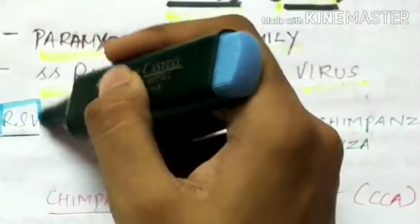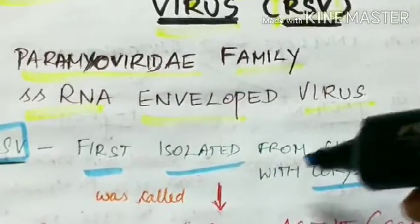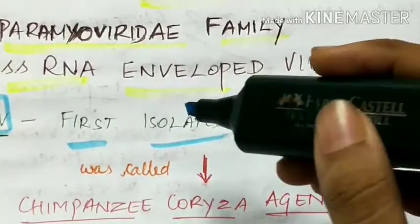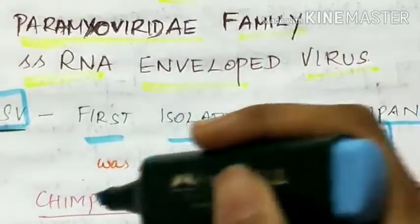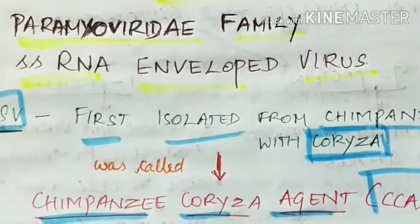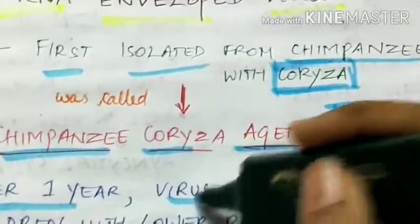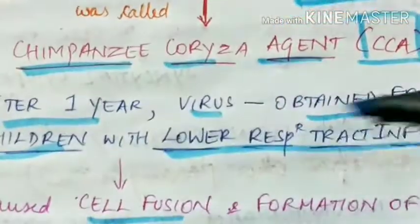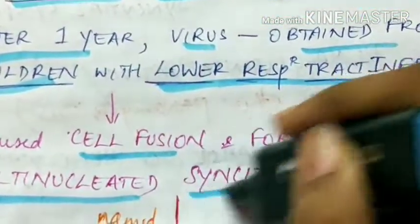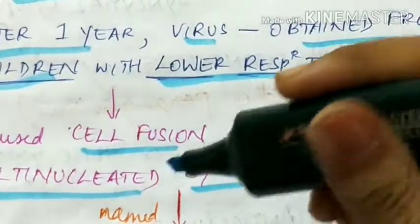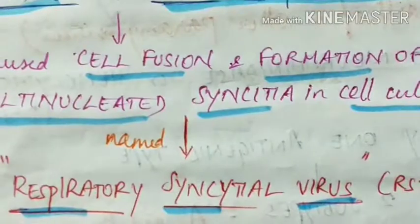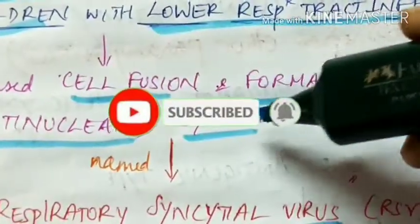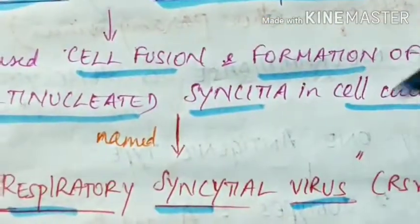The respiratory syncytial virus was first isolated from chimpanzees with coryza, a respiratory infection found in chimpanzees. Because of this, the virus was called chimpanzee coryza agent, or CCA. Later, the virus was obtained from children with lower respiratory tract infection, where it caused cell fusion and formation of multinucleated syncytia in cell cultures. So it was named respiratory syncytial virus — respiratory because it caused lower respiratory tract infection, and syncytial because it formed multinucleated syncytia in cell cultures.